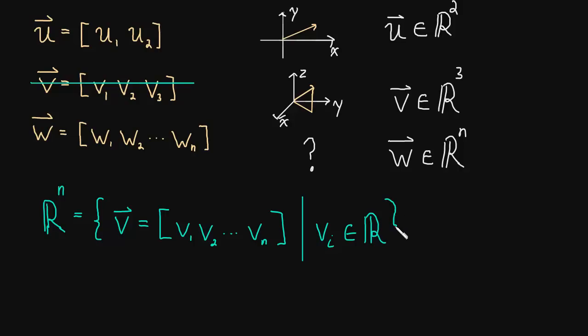It's a pretty obvious condition where we just say v_i is an element of the real numbers. And you might be thinking, how is that obvious? Well, let me explain to you what that means, if you don't already know.